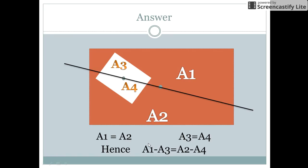When we subtract A1 minus A3, it becomes equal to A2 minus A4. In this way, the remaining portion of the rectangular cardboard can be divided into two equal parts. Stay tuned and keep watching.